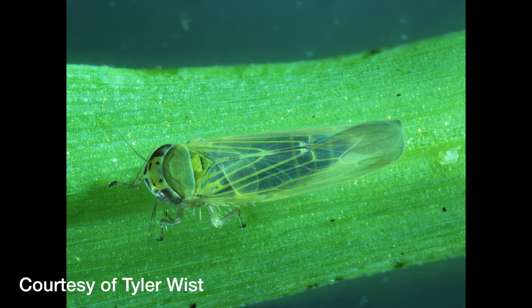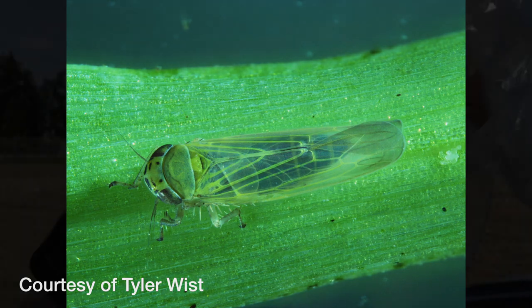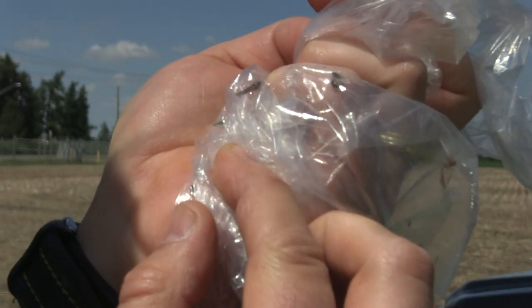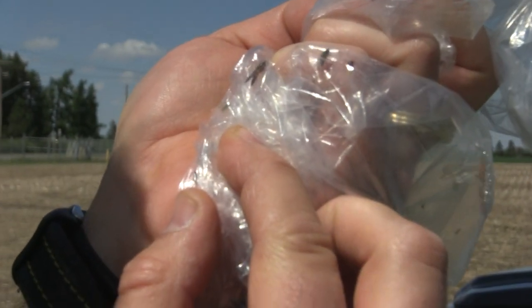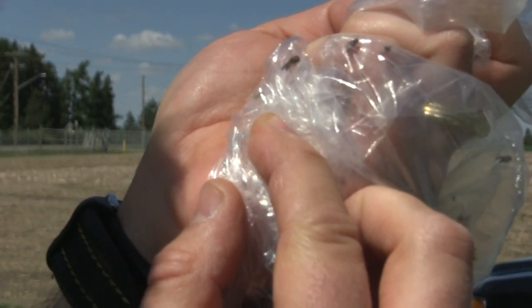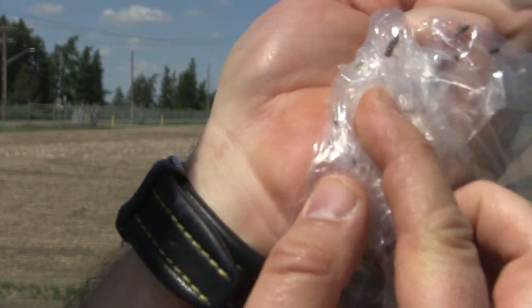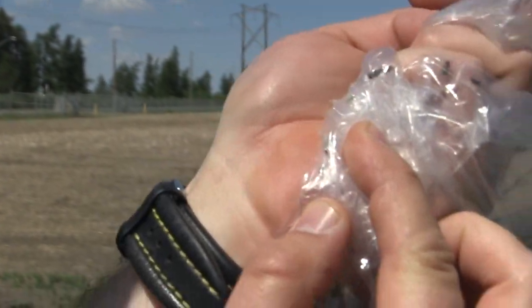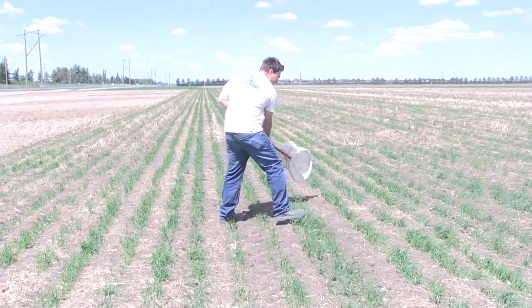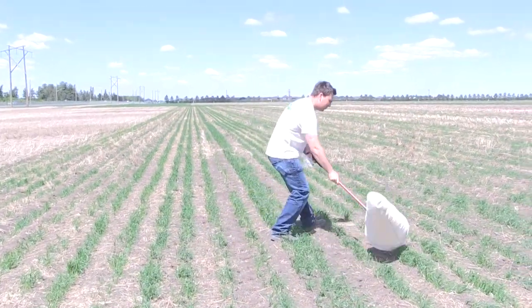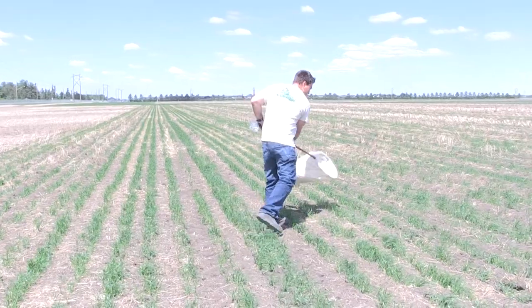You might not know what an aster leafhopper looks like. They're very small and they tend to jump, and when you get them into a sweep bag they kind of scuttle along sideways. So the only real way to find them in your crops is by using a sweep net.